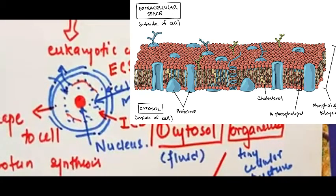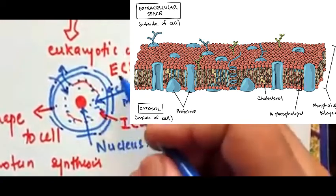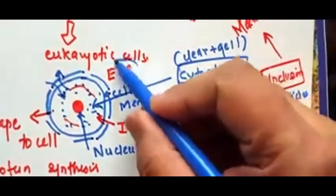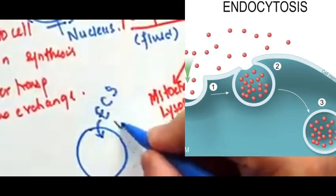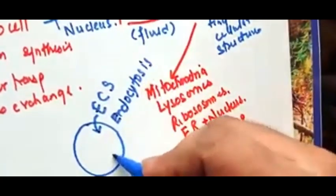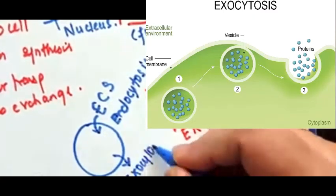The plasma membrane is made up of phospholipids, which form a bilipid layer differentiating the intracellular space from the extracellular space. When extracellular components go inside the cell, it is called endocytosis. When something from the cytoplasm goes outside, it is called exocytosis.